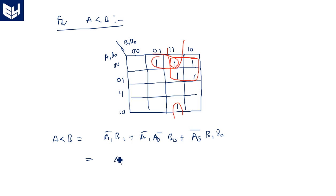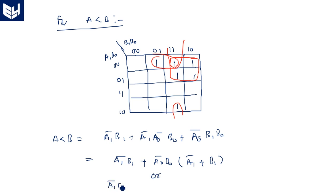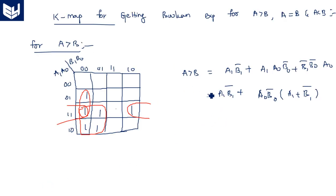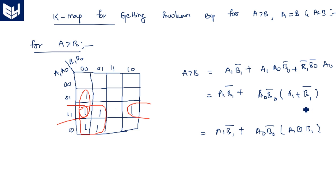Similarly, the A greater than B expression can be rewritten in XNOR format as: A1·B̄1 + (A1 XNOR B1)·A0·B̄0. These XNOR-based simplifications provide a neat, symmetric representation for all three comparator outputs.